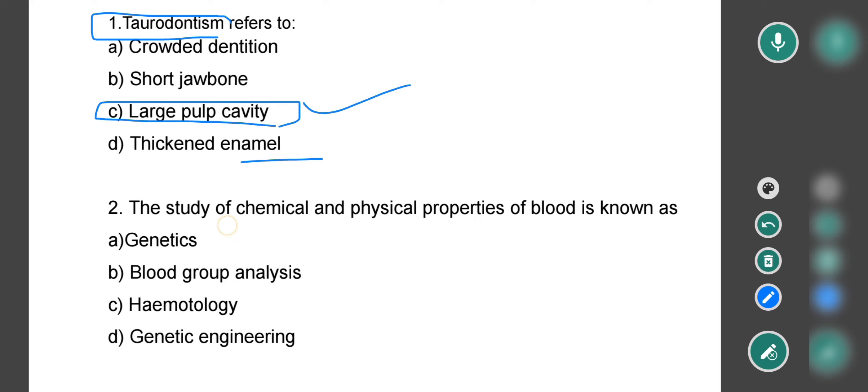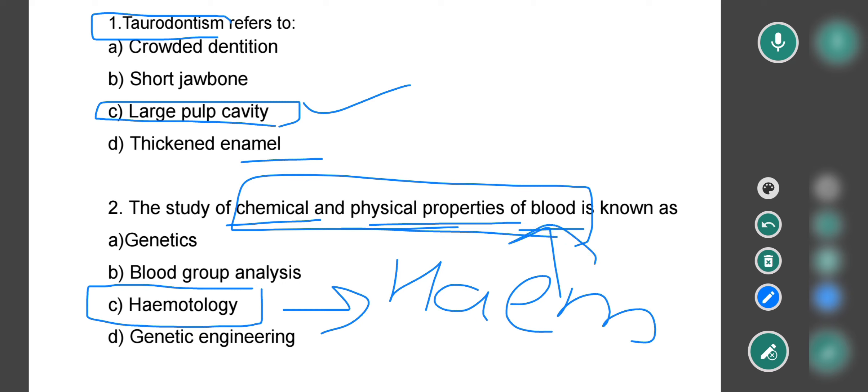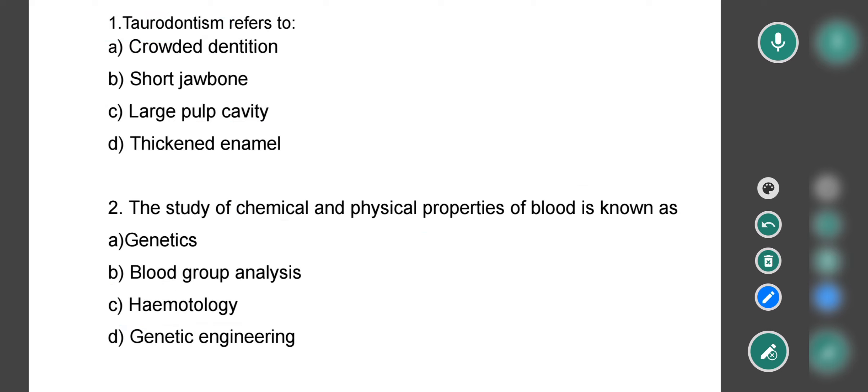Next question: The study of chemical and physical properties of blood is known as - genetics, blood group analysis, hematology, or genetic engineering? The correct option is option C, that is hematology. The study of blood's chemical and physical properties is called hematology.